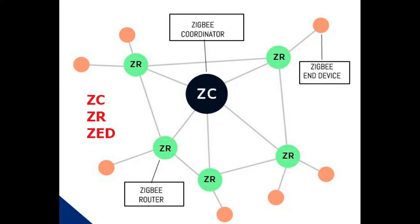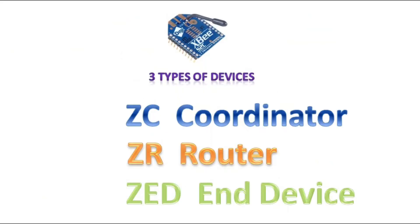XB devices can be configured as three types of devices: ZC coordinator, ZR router, and ZED end device. First one is coordinator ZC.